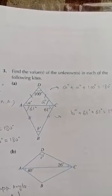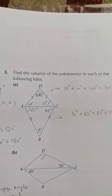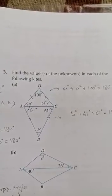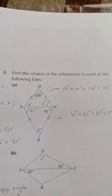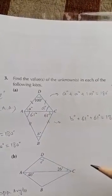Dear students, let's discuss question number three of exercise 11b. Here a kite is given and we have to find out the unknown angles a and b in this diagram.